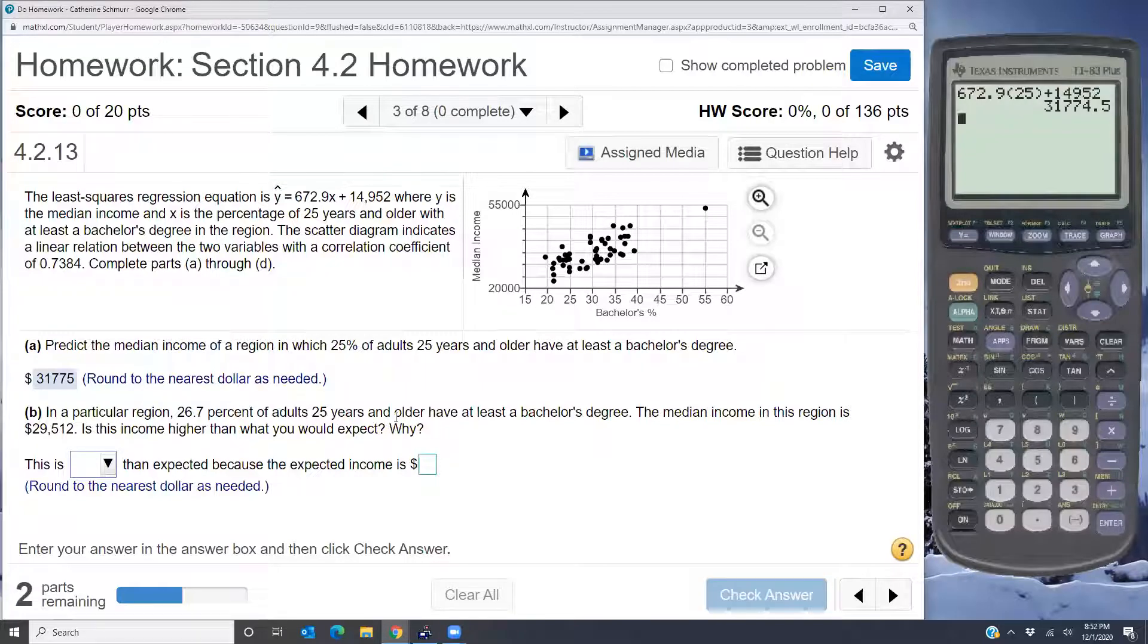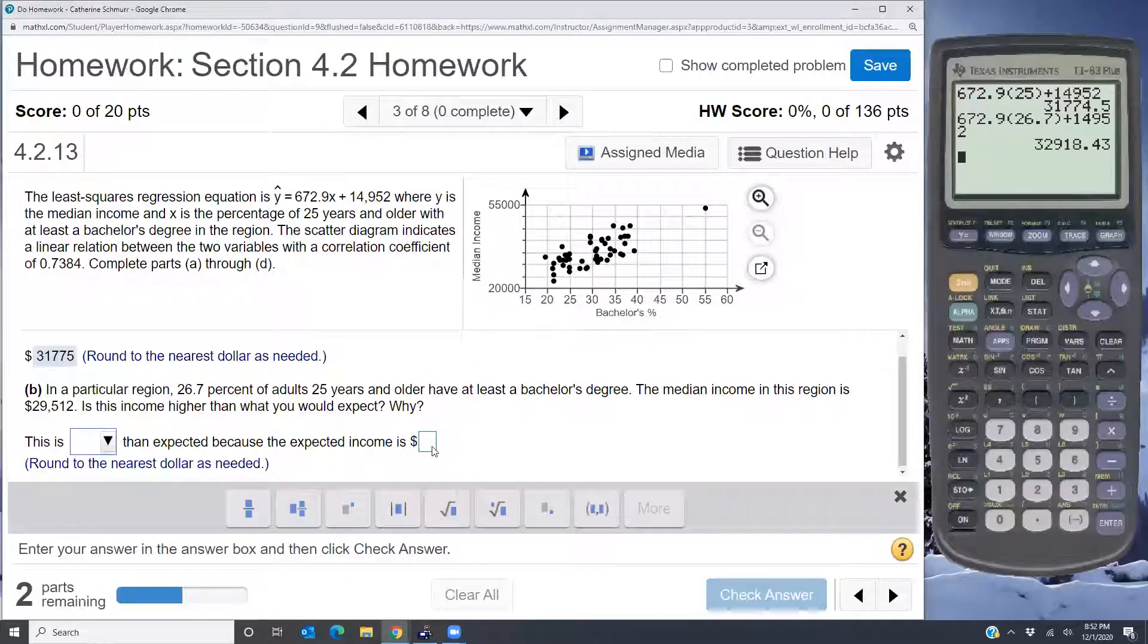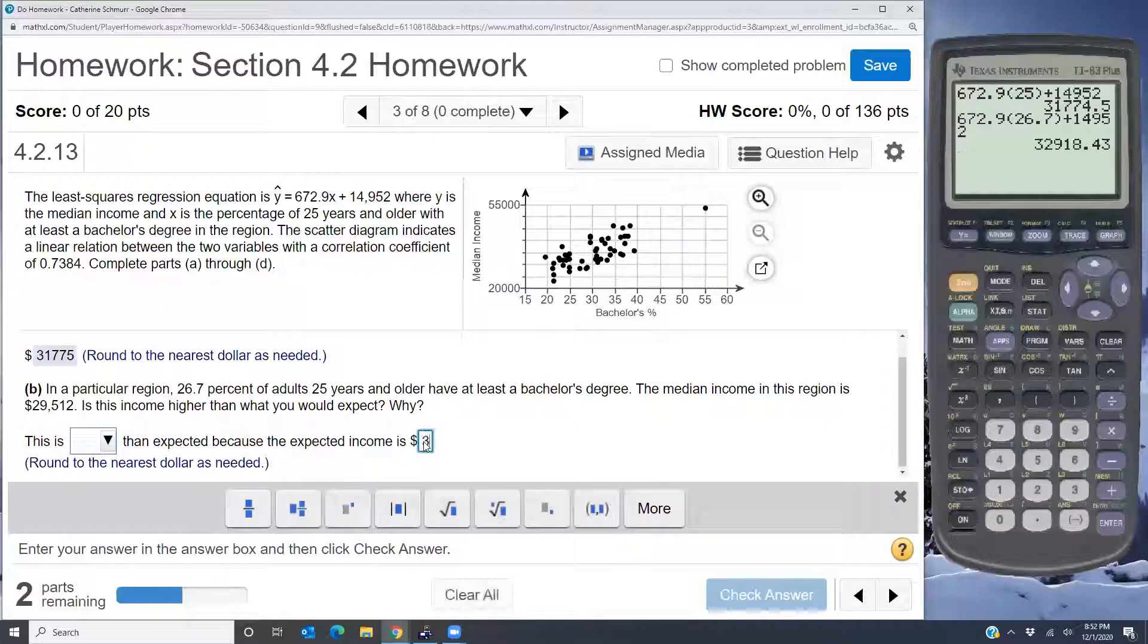Now what we would expect is what the equation gives us. So I'm going to go ahead and plug in the 26.7, and that gives me an expected income of 32,918 dollars, and that's rounded to the nearest dollar.